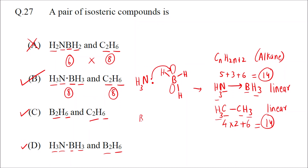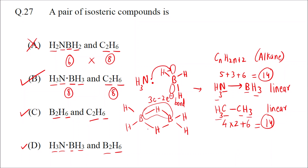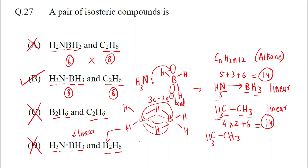Now if you see option C, why is it incorrect? Because the shape is different. B₂H₆ has a double bridge structure — these are called banana bonds, three-center two-electron bonds with one electron from boron and one from hydrogen. So the structure is different, whereas C₂H₆ is linear. So the shape or electronic arrangement is not the same — option C is incorrect. Option D is also incorrect for the same reason: one molecule is linear and the other has the bridge structure. So C and D are incorrect because shape is different. The correct answer is option B.